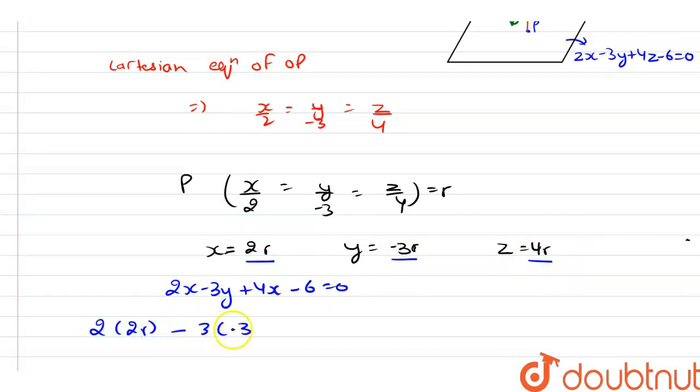So here we have 2 × 2r - 3 × (-3r) + 4 × 4r - 6 = 0.